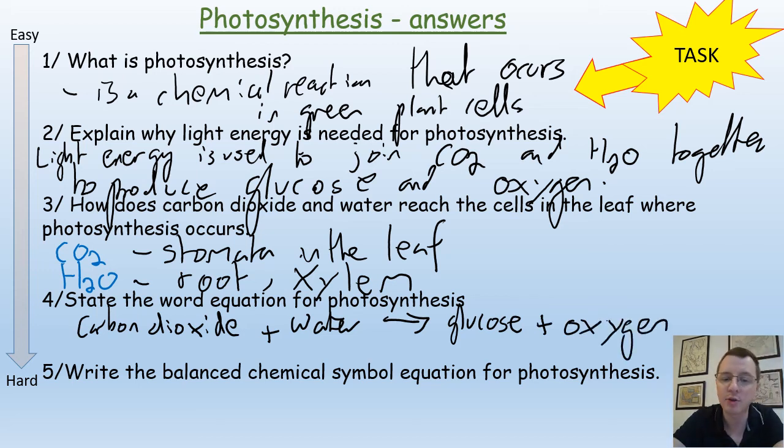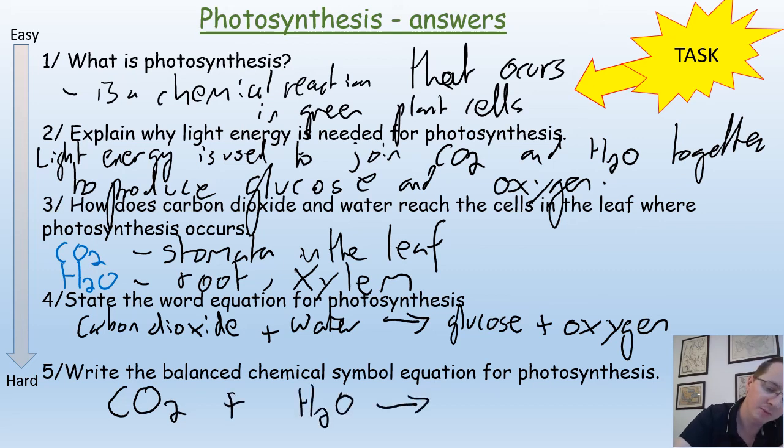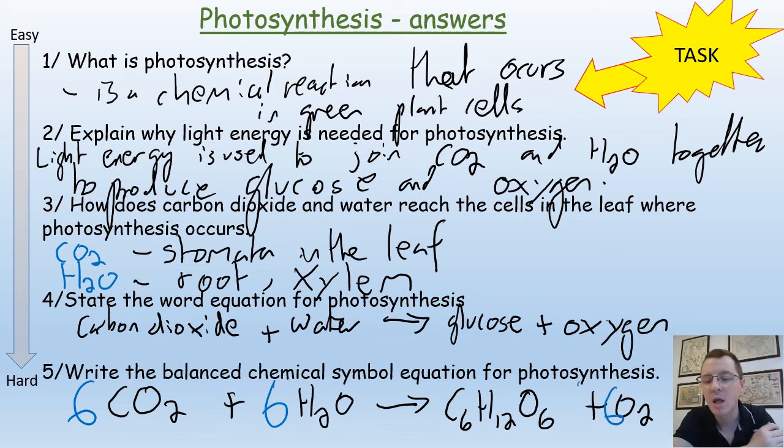Write the balanced symbol equation for photosynthesis. Well, let's write the symbol equation first. CO2 plus H2O gives you C6H12O6 plus O2. To balance it we would need to add six. Six carbon dioxide molecules plus six H2O molecules gives you one molecule of glucose plus six molecules of oxygen.